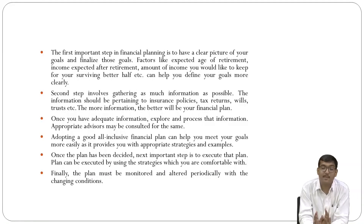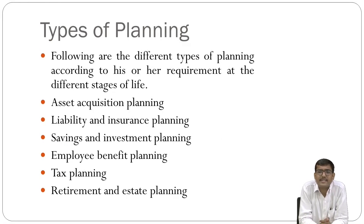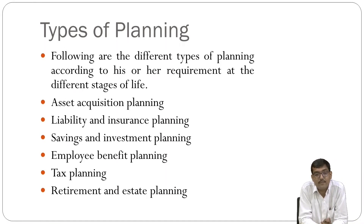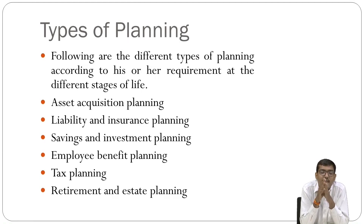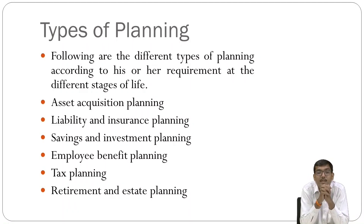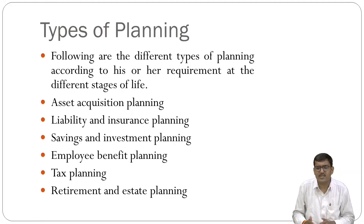Now the next topic is types of financial planning. The following are the different types of planning according to requirements at different stages of life. The first is asset acquisition planning — this ultimately talks about real estate planning: at which age you require your assets and you plan accordingly. The second is liability and insurance planning — at which stage you avail insurance with respect to health, medical claim, etc.